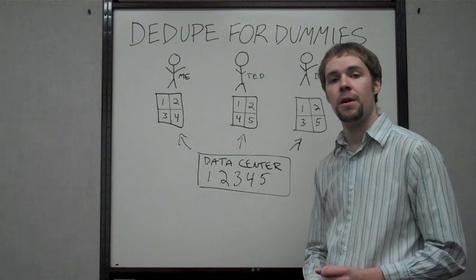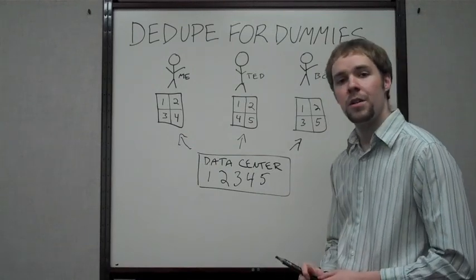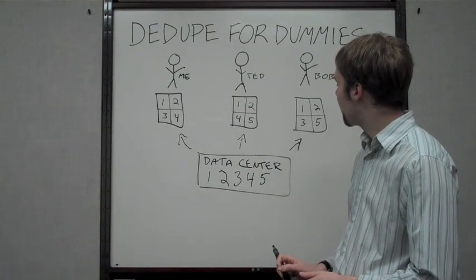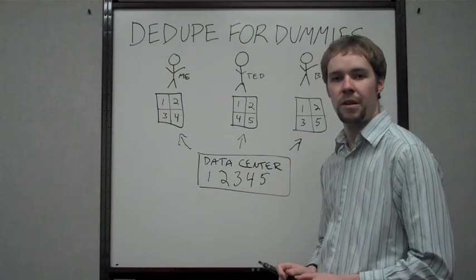That's block level deduplication, and that's the way that Powered by 9 works. I hope you've understood deduplication a little bit better now, and that you can understand that block level deduplication is a much stronger and much more efficient way to do it than file level.